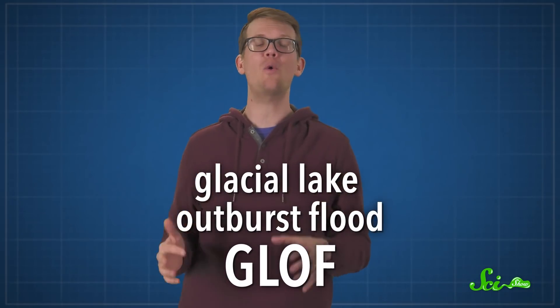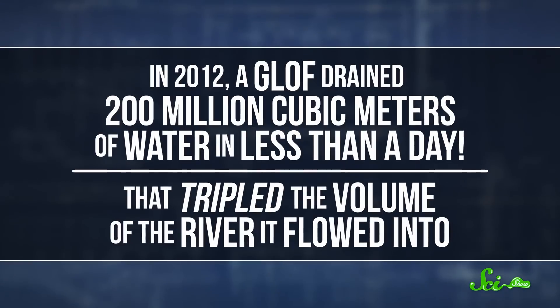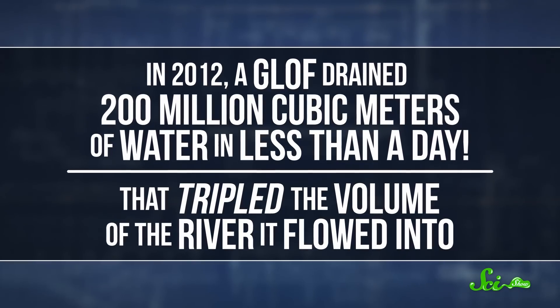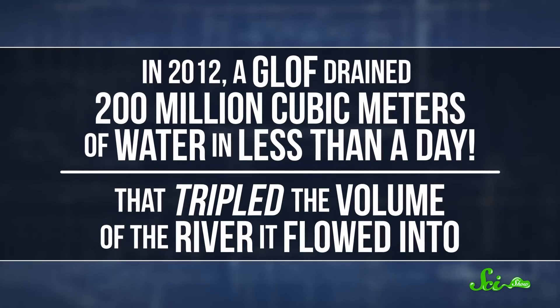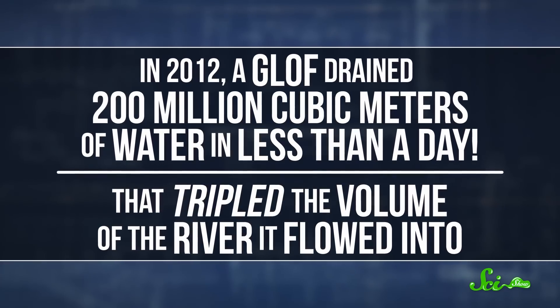An event like this is called a Glacial Lake Outburst Flood, or a GLOF. Back in 2012, a GLOF drained a whopping 200 million cubic meters of water in less than a day. That tripled the volume of the river it flowed into. Luckily, there aren't too many people in the area around it, but the flooded river did do some damage to roads and farm animals.